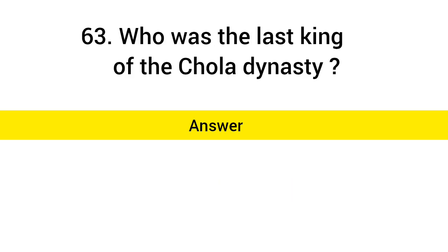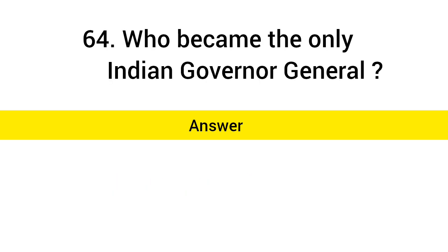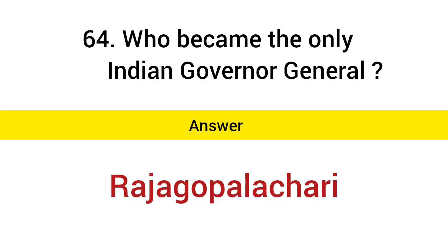Who was the last king of the Chola dynasty? Answer: Rajendra Chola III. Who became the only Indian Governor-General? Answer: Rajagopalachari.